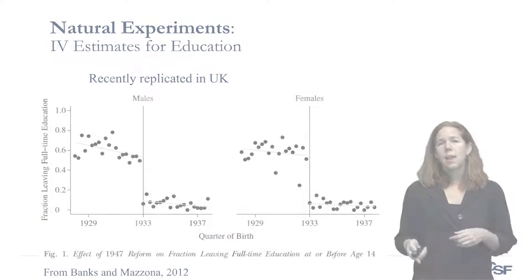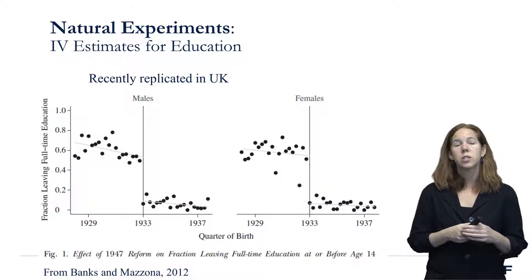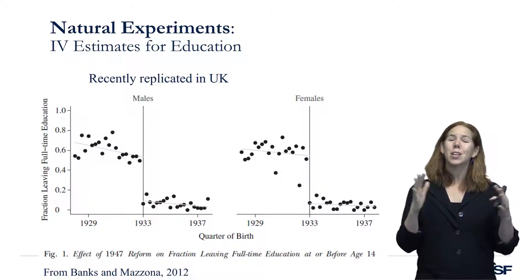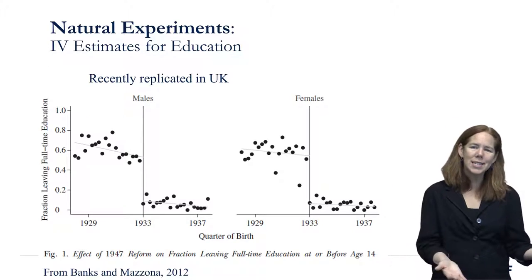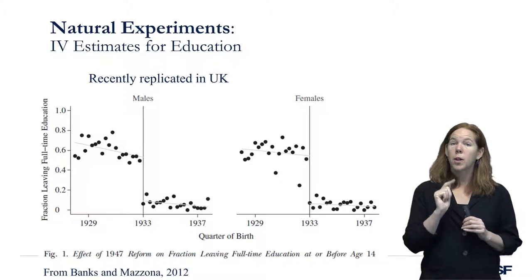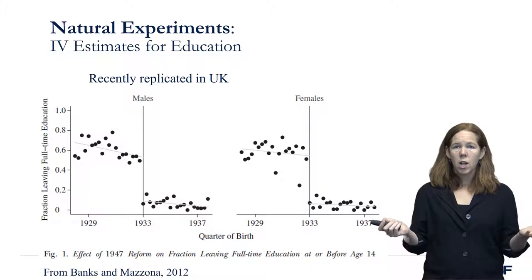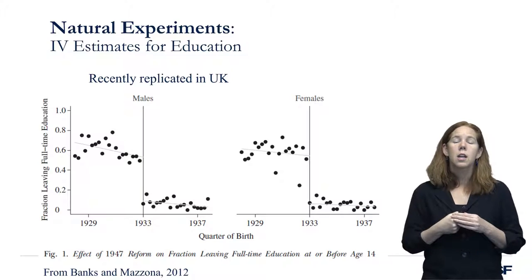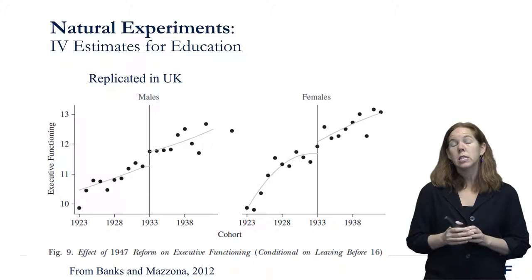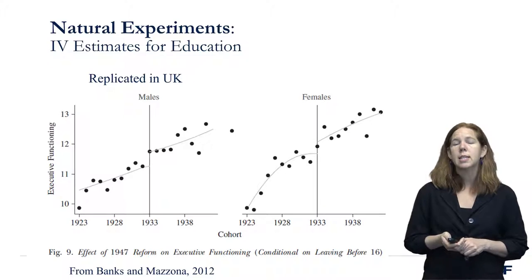This work was also replicated in the United Kingdom. Banks and Mazzonna published work showing that the UK had a major policy change — they increased the age at which children could stop school — and it had a huge impact on how much education people completed. In the UK, unlike the US, they took the policy change seriously and there was a major decrease in the number of children dropping out before age 14. When they plotted the cognition of people averaging 65 at assessment, you still see this small but meaningful impact on average cognition. They found results very similar to what we found in the United States, and now similar studies have been done in many other places.